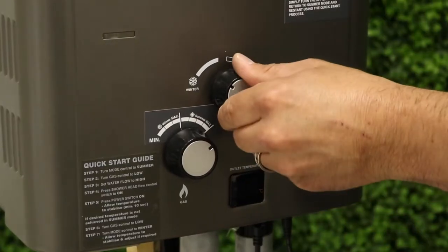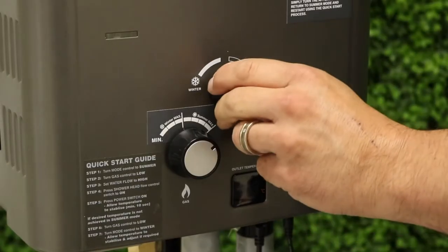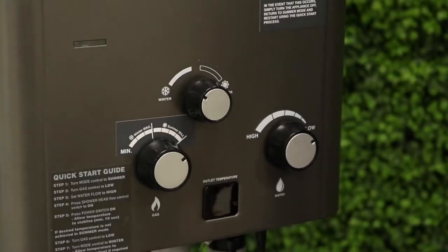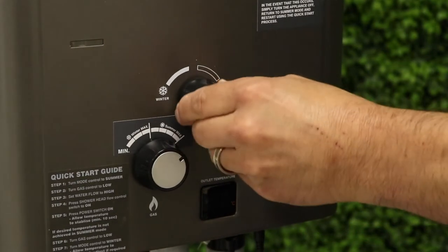Winter summer dial. You select winter or summer mode based on the source water temperature. Select winter mode for colder source water. The burner will operate at a higher rate. Select summer mode for warmer source water. The burner will not need to operate at the same rate as winter mode.